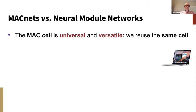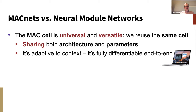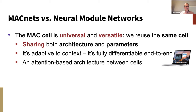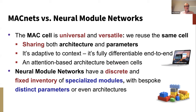We felt that MAC nets were, in some sense, a better direction than what you found in neural module networks. On MAC networks, there was this single MAC cell which was universal and versatile — one architecture and set of parameters for the MAC cell. It could be trained differentiably end to end and just adapt to compute different things in context. That seems a good basis for flexible reasoning. In contrast, neural module networks make use of specialized hand-designed modules for CLEVR-style reasoning, each with distinct custom architectures for things like selecting and counting — not a general flexible architecture for reasoning.